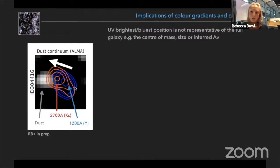For example, the size of the source is not just this lower clump, it's the whole object. It's likely not showing us the center of mass of the source, and if we were to infer a dust attenuation AV value, it wouldn't be representative of the full galaxy.